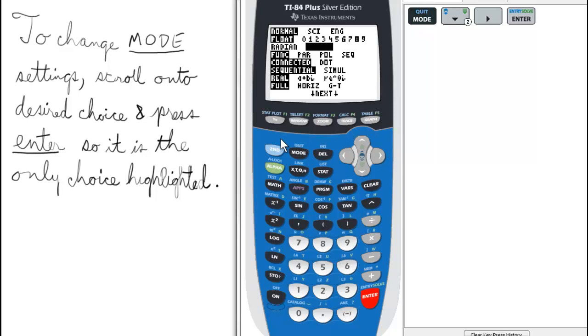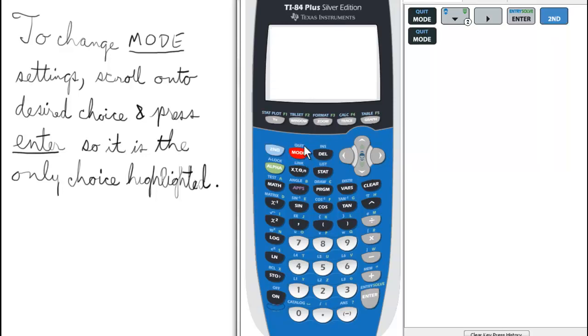To go back to the home screen, we press second and mode to quit. Now for instance, let's press second and x squared to select the radical sign, negative 4. In the current mode, it gives us an error message. So press clear, and then we can go to mode.